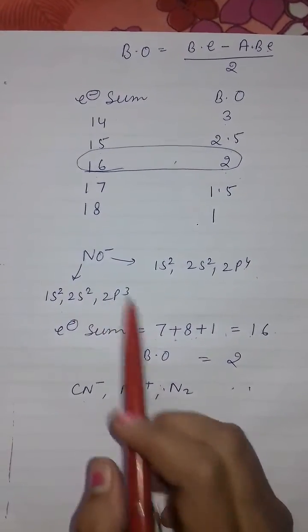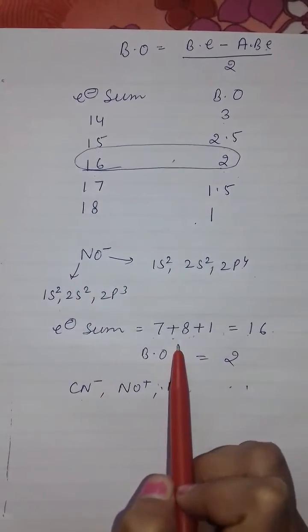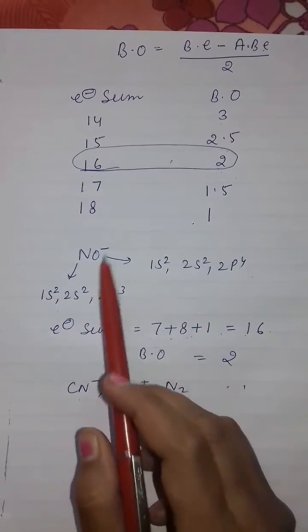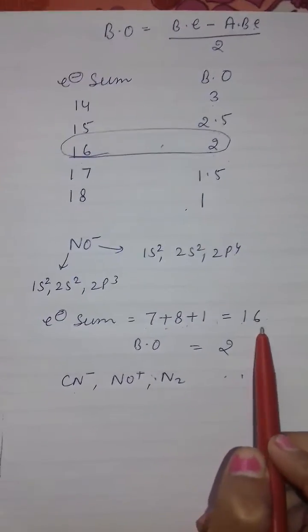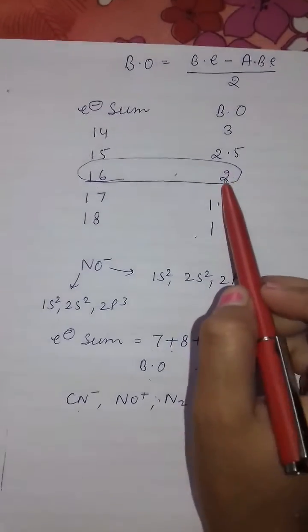Electron sum for nitrogen is 7, for oxygen is 8, and 1 for this negative charge is equal to 16, then bond order will be 2.